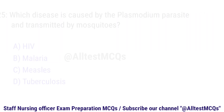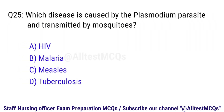Question 25. Which disease is caused by the plasmodium parasite and transmitted by mosquitoes? The right option is B. Malaria.